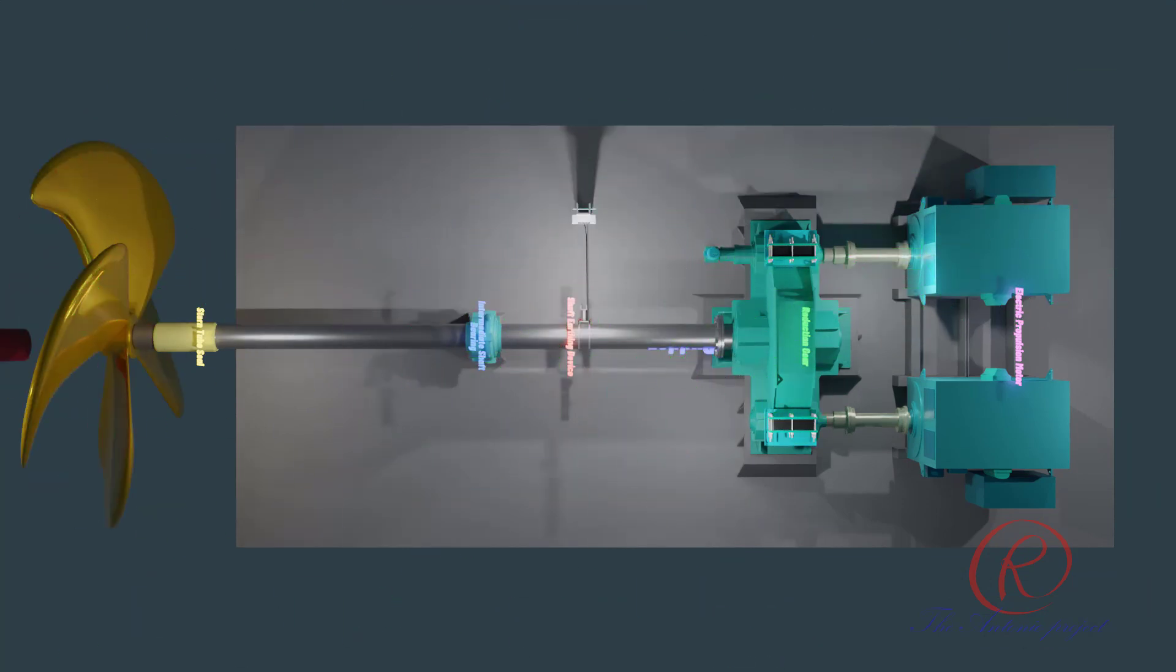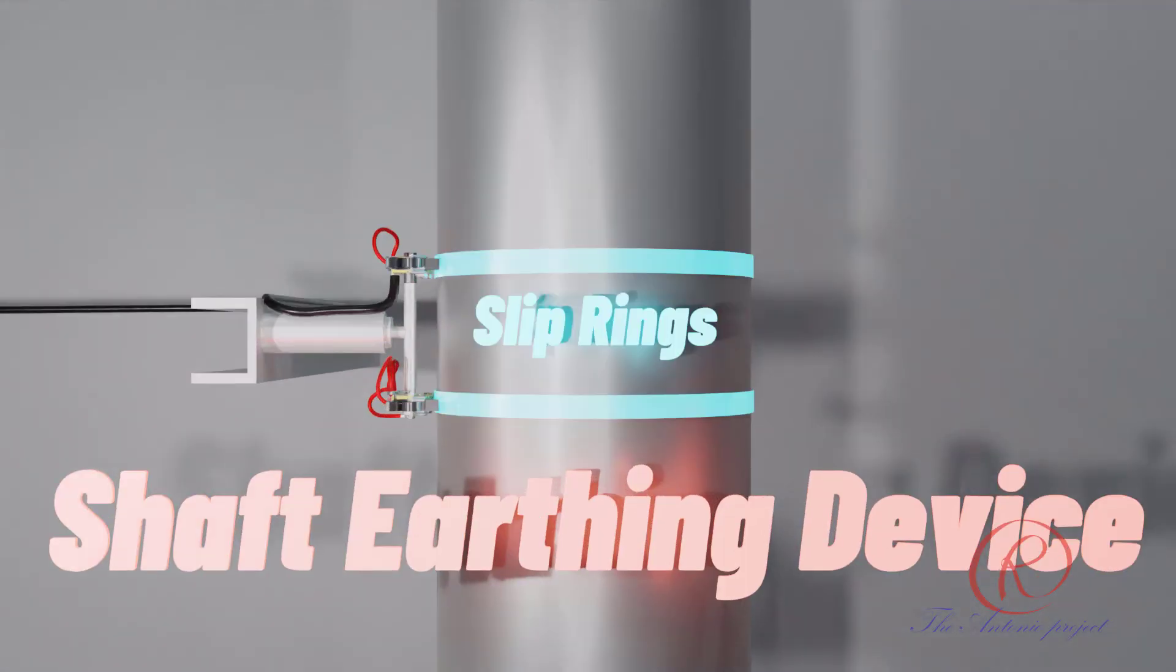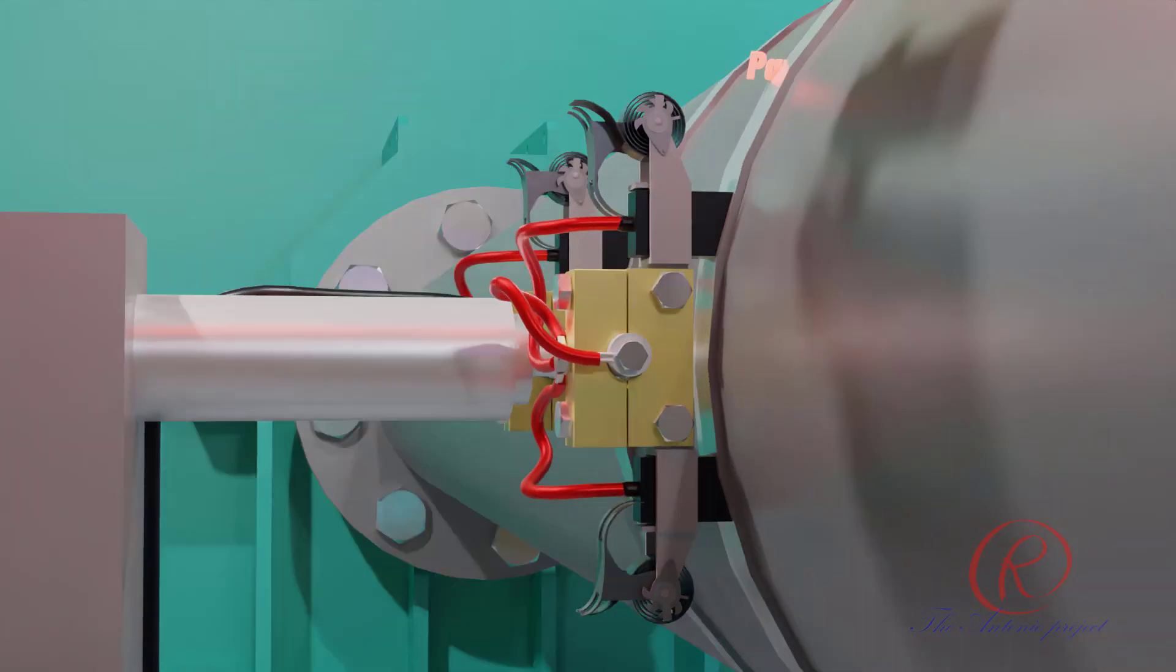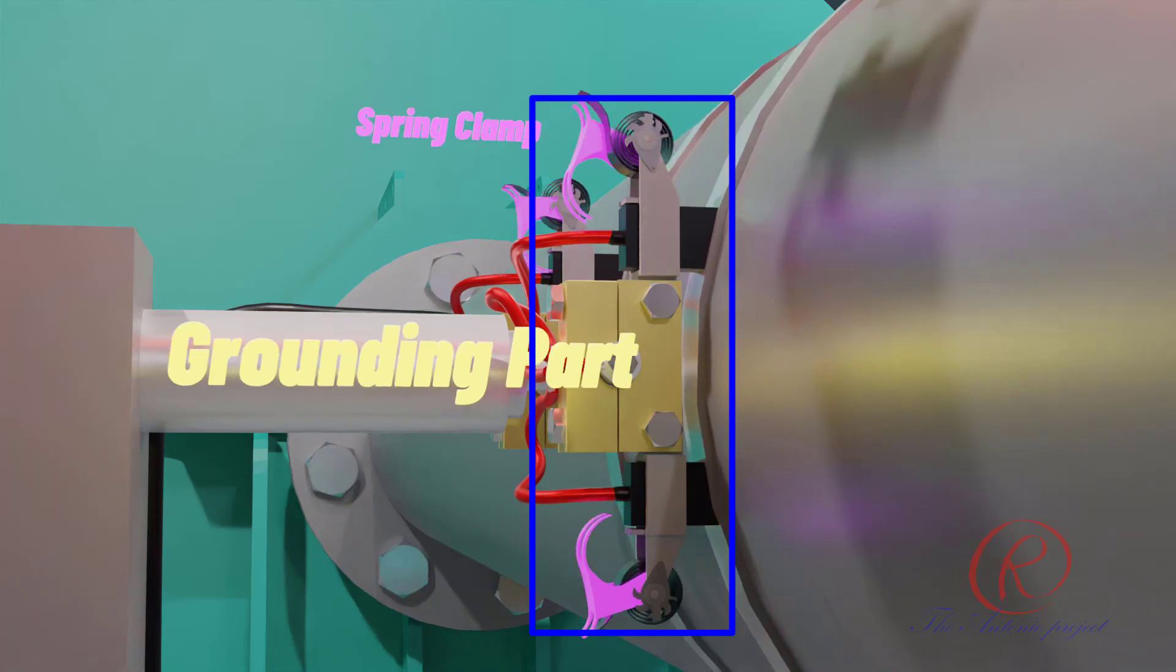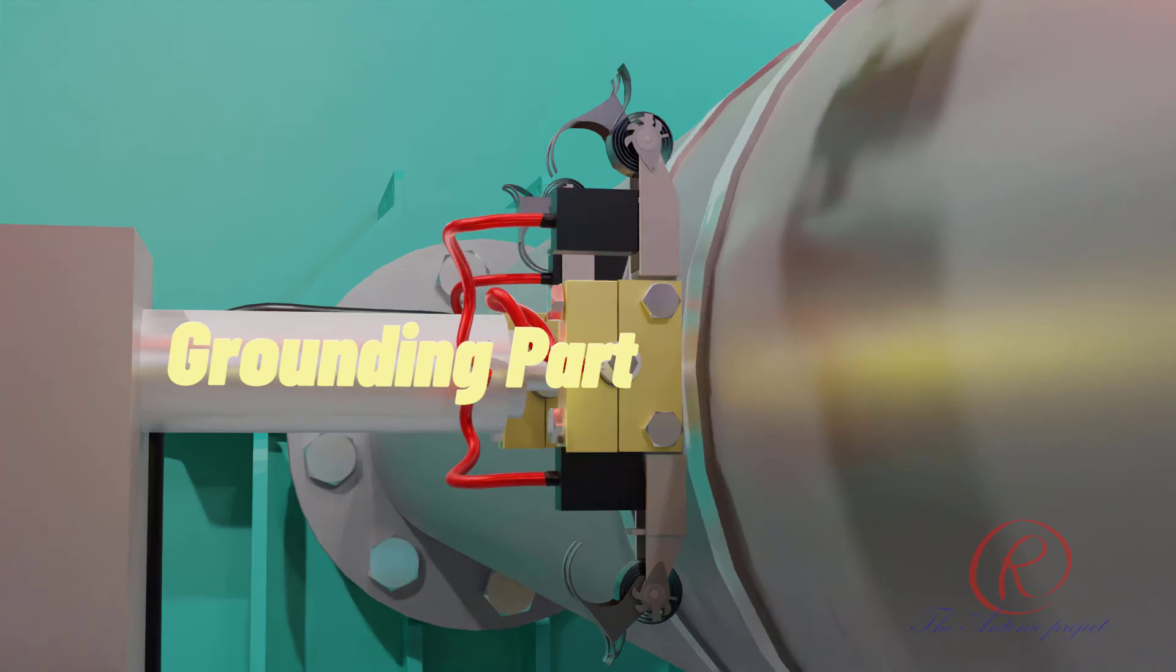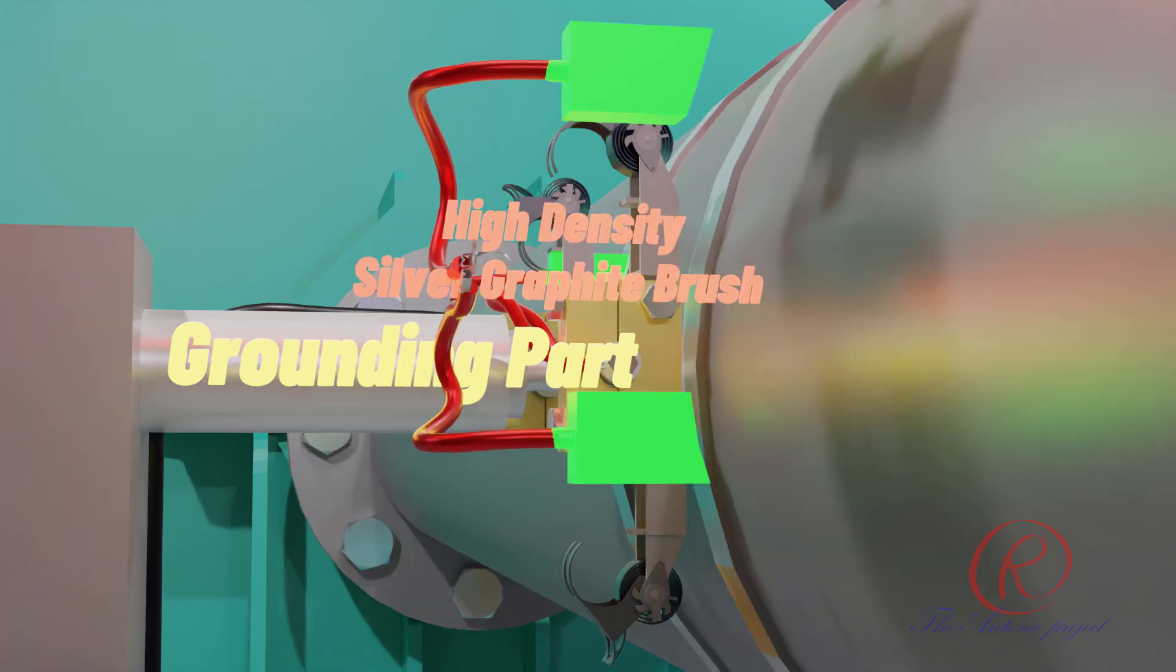Shaft earthing device part names. Following are part names of shaft earthing device. Two pieces slip rings made of silver alloy attached for electrical contact of shaft propeller. There are three sets of brush holders. Two sets used for connecting to earthing or grounding part and one set for monitoring or detector part. Brush holder consists of a pole, pan spring, and spring clamp. High density silver graphite brush used for face-to-face contact with slip rings. The effectiveness of the shaft earthing system should ensure a maximum contact resistance of no greater than 0.001 ohms.